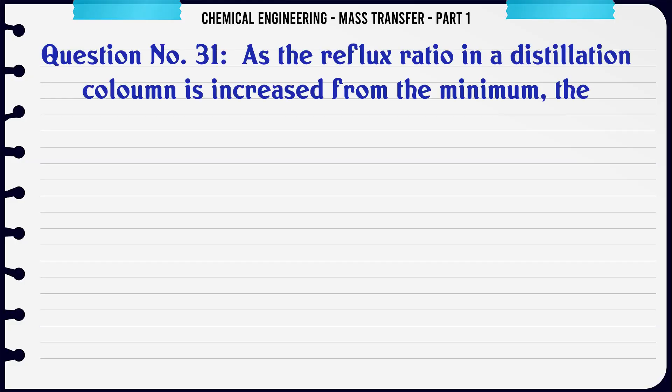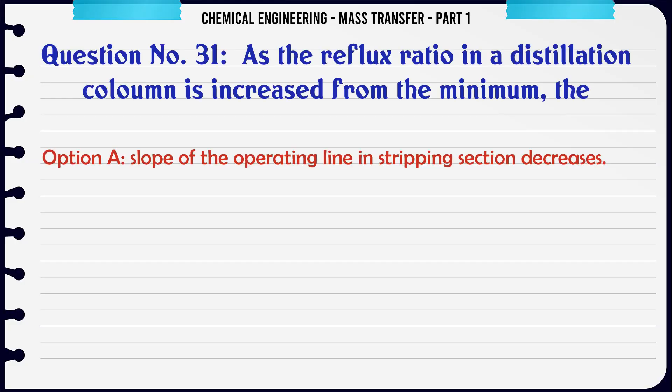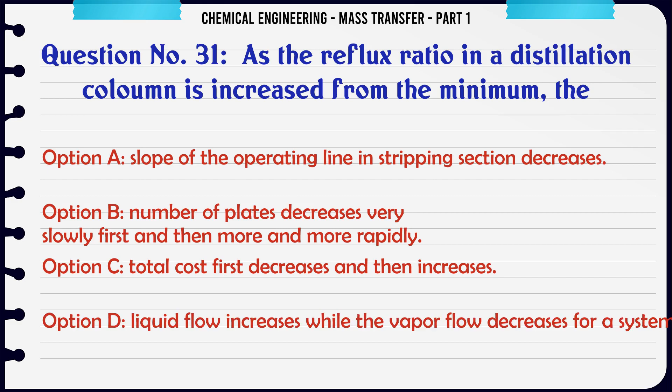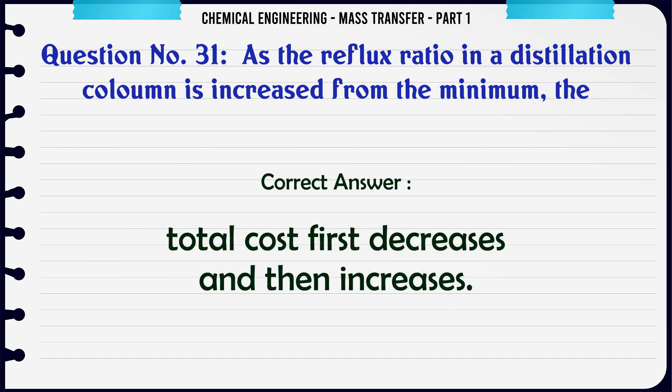As the reflux ratio in a distillation column is increased from the minimum: A. Slope of the operating line in stripping section decreases. B. Number of plates decreases very slowly first and then more and more rapidly. C. Total cost first decreases and then increases. D. Liquid flow increases while the vapor flow decreases. The correct answer is total cost first decreases and then increases.